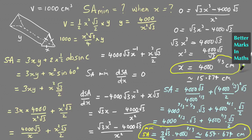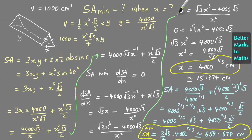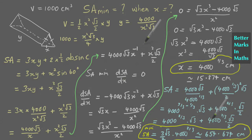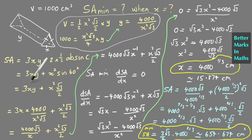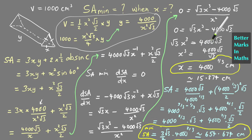There is a fair bit of working for this one. Starting from the surface area expression, substituting the y value in, then taking the derivative, letting it equal zero and solving for x, and finally working out the actual minimum surface area by substituting x back in.